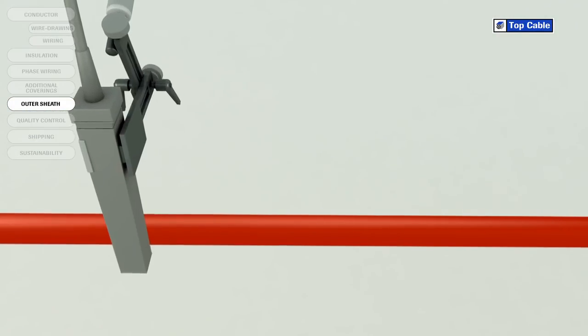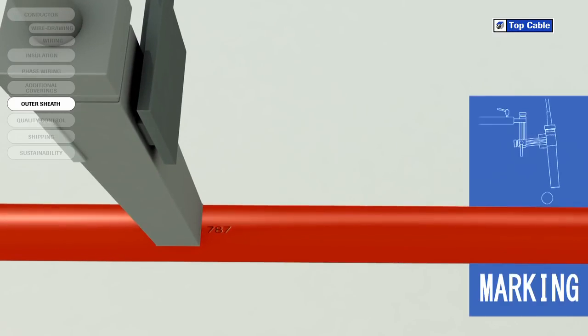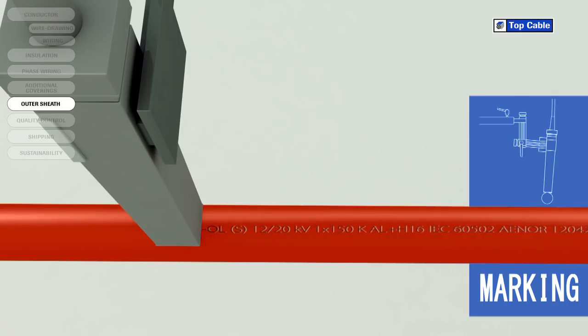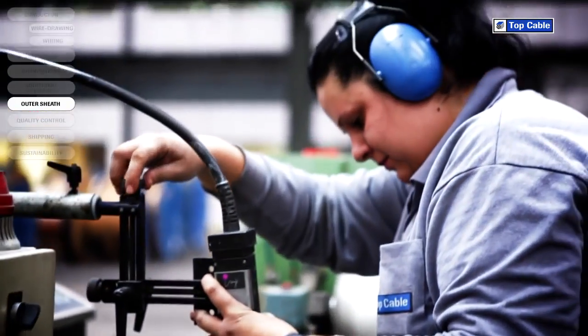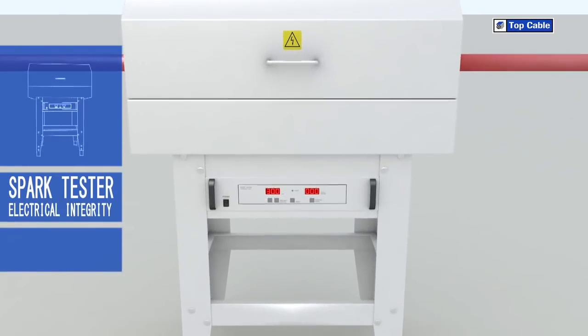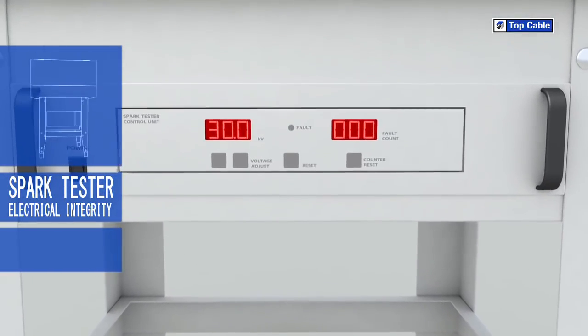So that all Top Cable customers can correctly identify their cables, the cables are marked with the most important information: manufacturer, trade name, cable name, number of conductors, cross section, construction regulation and standards, CE marking, and other information of interest such as the product's certification. There is also a meter-by-meter mark on the cable to help customers with their stock control.